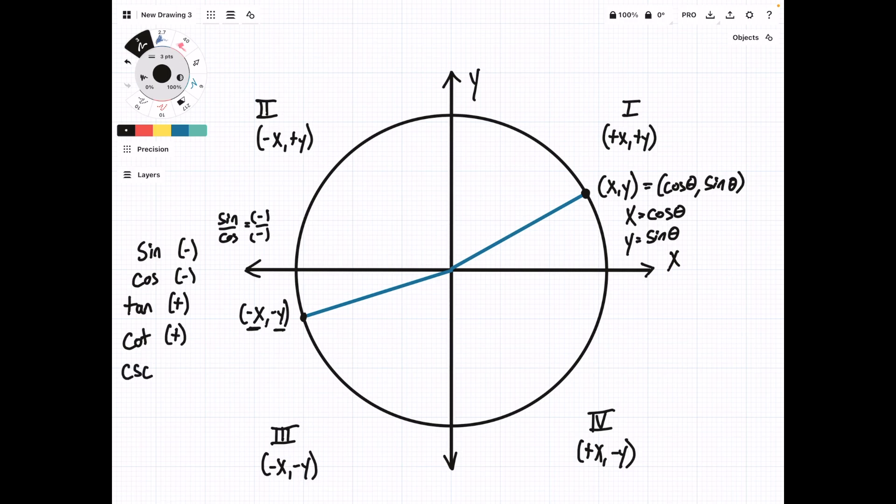Cosecant is 1 over sine, so that's 1 over some negative value, so this is going to be negative. And then we have secant, which is 1 over cosine, which is, again, 1 over some negative value, so this is going to be negative.